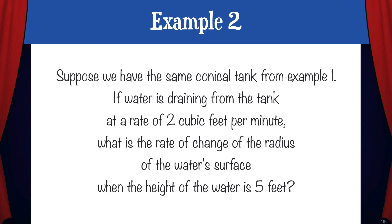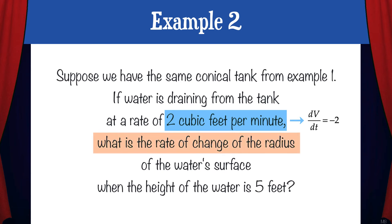Let's do another example. Suppose we have the same conical tank from example one. If water is draining from the tank at a rate of 2 cubic feet per minute, what is the rate of change of the radius of the water's surface when the height of the water is 5 feet? Since water is draining from the tank, we know dv/dt equals negative 2 — it's negative because water is draining out. Now we want to find the rate of change of the radius of the water's surface, let's call this dr/dt, and we want to find that when the height of the water is 5 feet.